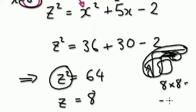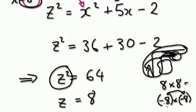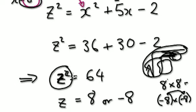But then there's another thing: if you have minus 8 times minus 8, that's just 8 times 8 as normal which is 64, and then minus times minus is a positive. So the point I'm trying to make is that minus 8 is also an answer, because minus 8 times minus 8 is also 64. So when you have z squared equals something, you might get two solutions — z equals 8 or minus 8.